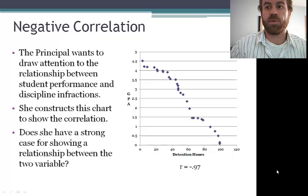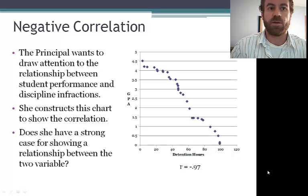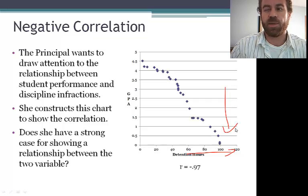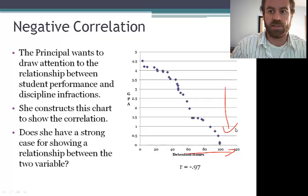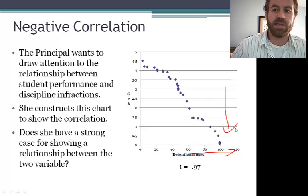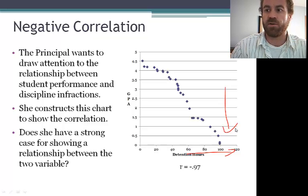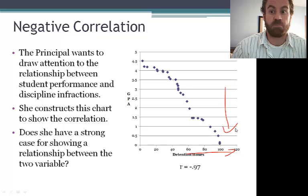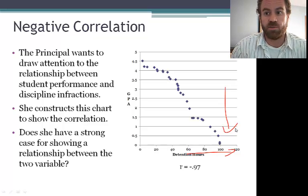Finally, the principal wants to know if there is a relationship between discipline infractions and GPA. And according to this chart, there clearly is. As the detention hours go up, GPA goes down. And again, we have to be careful about causation in all of these cases. Does the high detention hours cause low GPA or vice versa? If we make the causation correlation error, the principal might be tempted to simply not assign attention and assume that grades will improve.